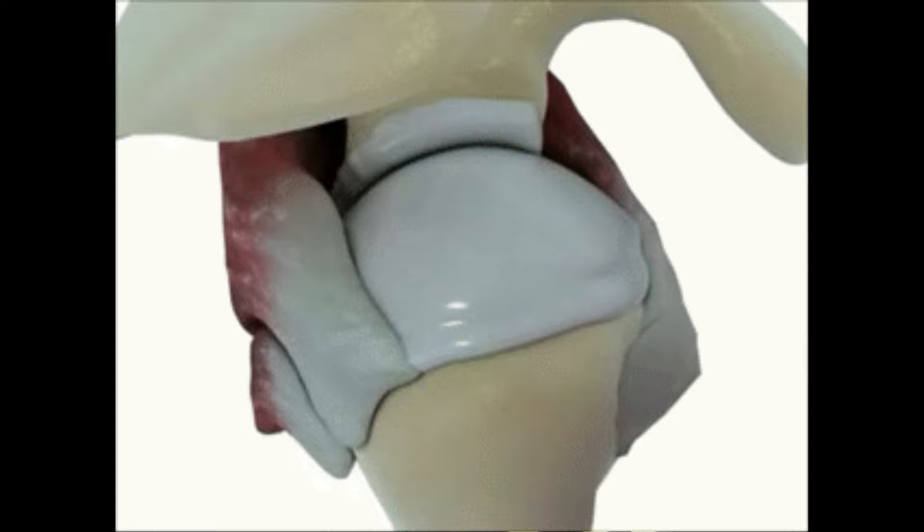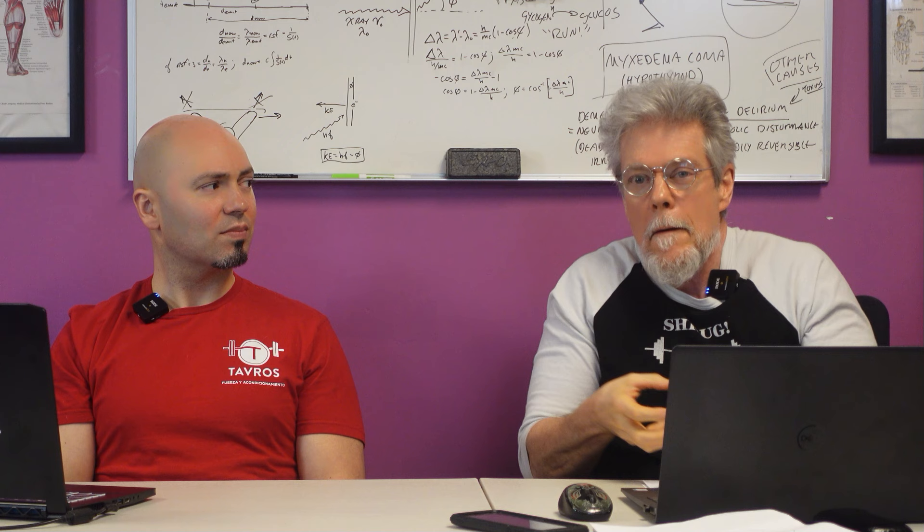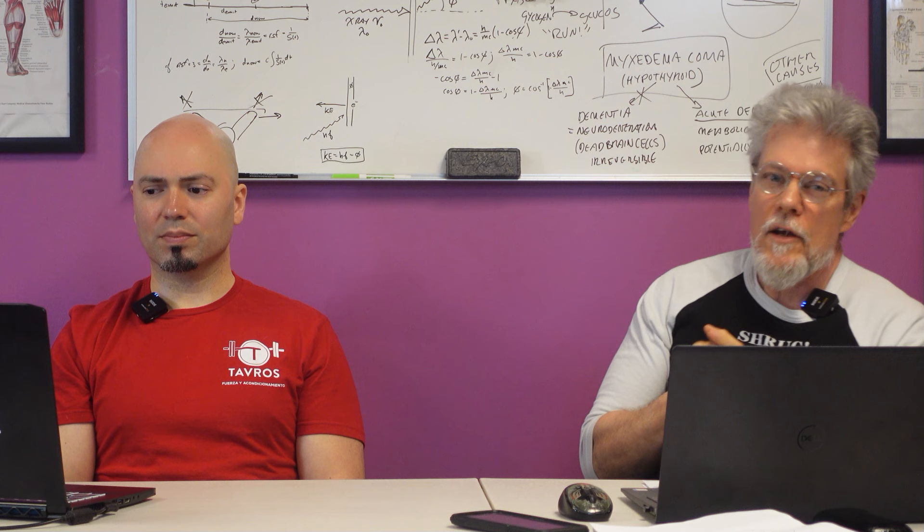That's what your rotator cuff muscles are, and they finely maneuver and position the head of the humerus in the glenoid fossa of the shoulder joint. That's what the rotator cuff muscles do. The rotator cuff muscles are also pulling on the humerus—they're pulling the humerus back into the glenohumeral joint during the deadlift. So they're actually playing a role, and the deadlift can strengthen the rotator cuff muscles in that manner.